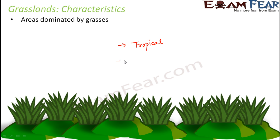There exist many different types of grasslands. We have tropical grasslands, which mostly have scattered individual trees over a huge stretch of land. In temperate grasslands, grasses are the dominant vegetation. These types of grasslands are located in different parts of the world and have different climatic conditions.